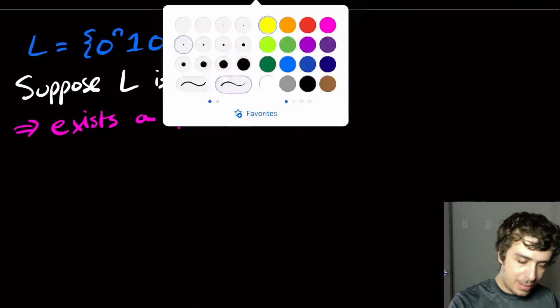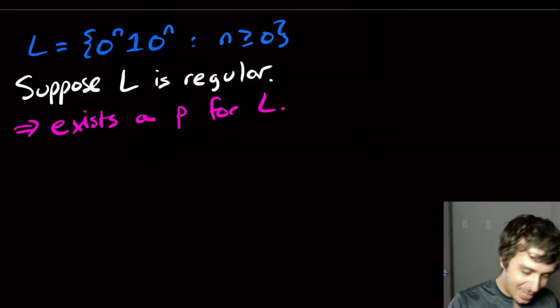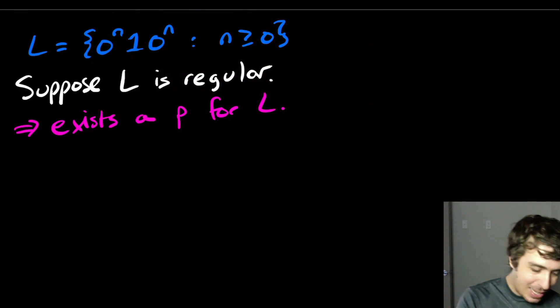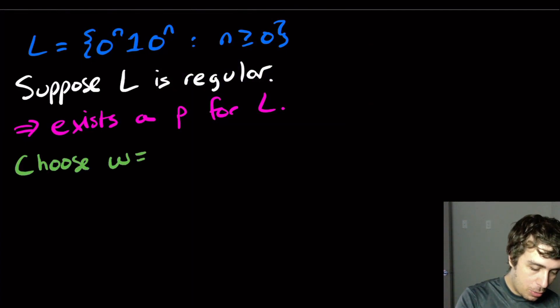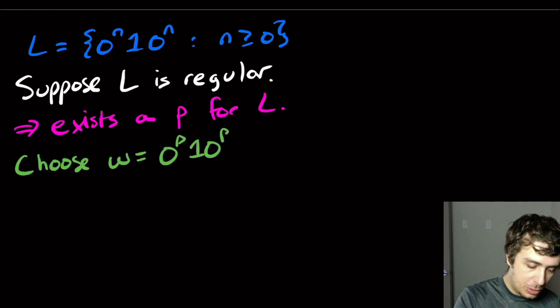My string went away, so let's choose it again: W equals 0^P, 1, 0^P.